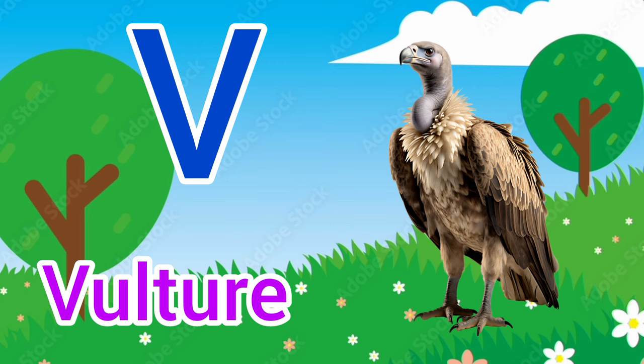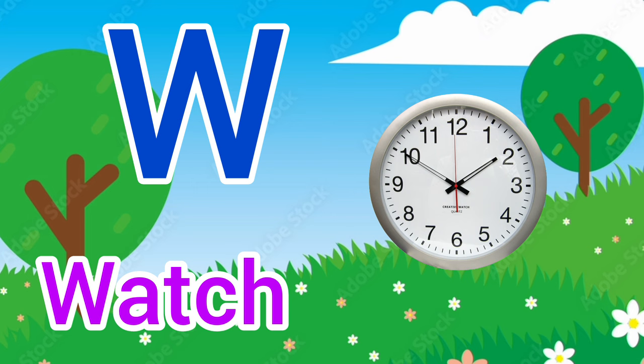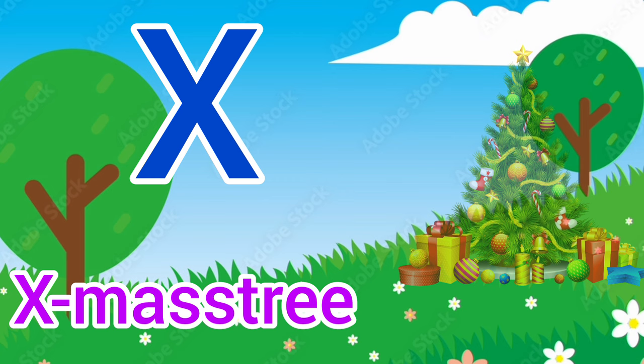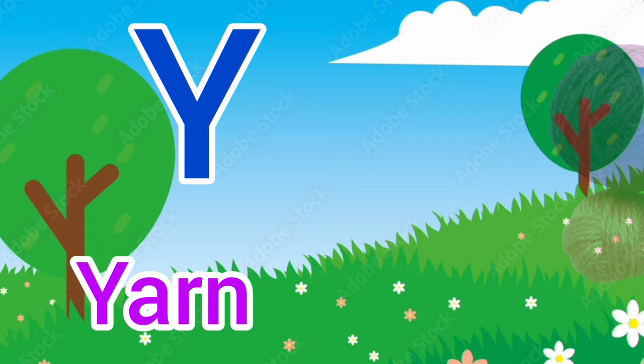W. W for watch, watch means ghari. X. X for xmas tree, xmas tree means xmas tree. Y. Y for yarn, yarn means dhaga.